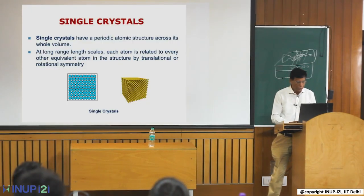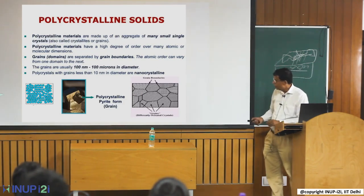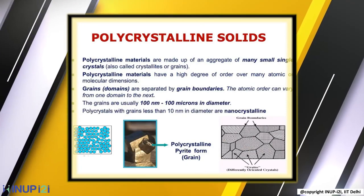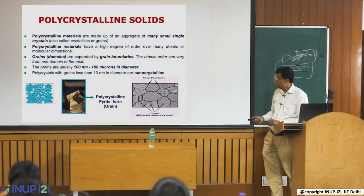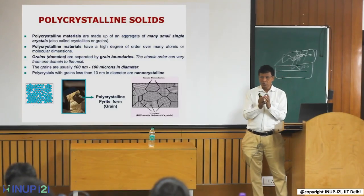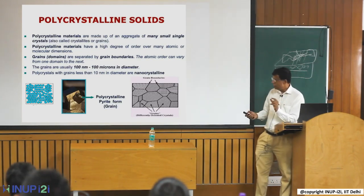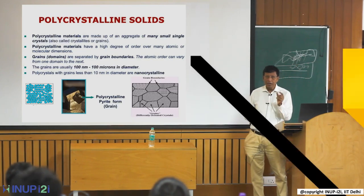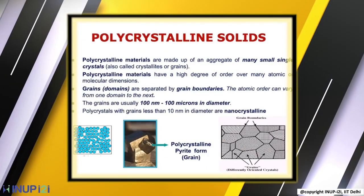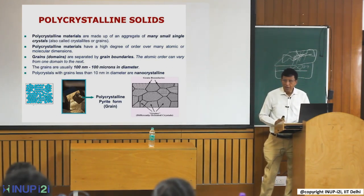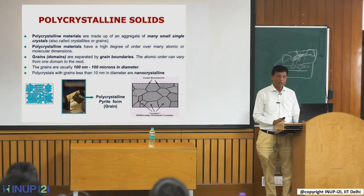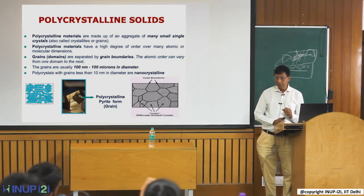If you have a material where ordering exists only over a small region, and then there is another ordered region but with some disturbance in between, that is what we call a polycrystal. Broadly, a polycrystal is a collection of many single crystals together. The unit where you get this kind of ordering could be millimeters, 100 nanometers, or even 10 nanometers — depending on how you prepare the material.